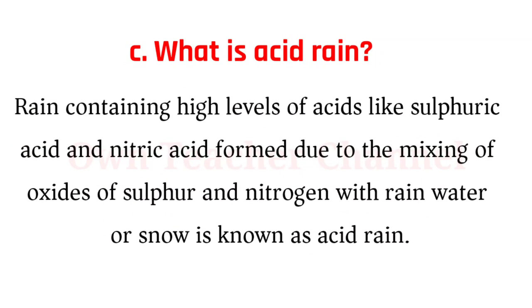C) What is acid rain? Acid rain is rain containing high levels of acids like sulfuric acid and nitric acid, formed due to the mixing of oxides of sulfur and nitrogen with rainwater or snow.